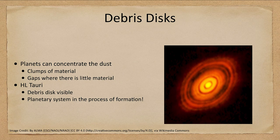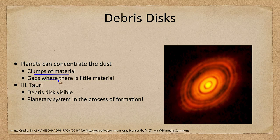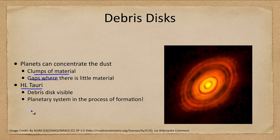When we look at some of the debris disks, we can see around these in the longer wavelengths, and the planets can help concentrate that dust and give us clumps of material. So we'll get clumps of material in some regions and gaps in others. Around the forming protostar at the center there are various rings of material, and some have begun to clear out while others are condensing. We can see things like this in the star HL Tauri, where the debris disk is still visible and this is a planetary system in the process of formation.